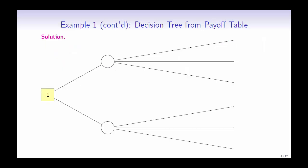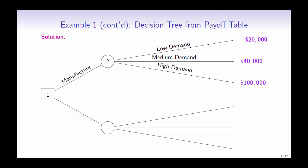We start off with the decision node. If the company decides to manufacture the component, then there are three following outcomes. If it is in low demand, the company is projected to lose $20,000. If it is in medium demand, the company is projected to profit $40,000. And when it is in high demand, the company is projected to profit $100,000.